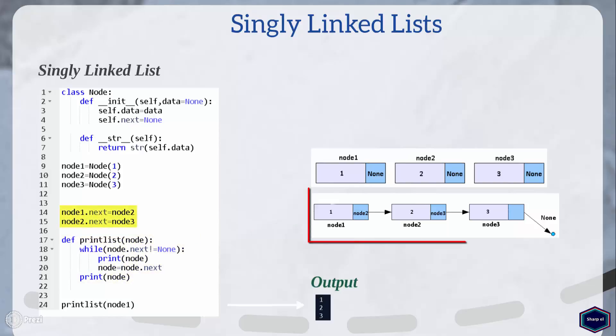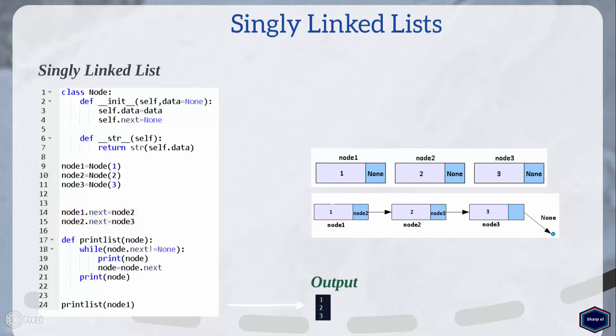I have created a singly linked list, but it is not the right way one should create a singly linked list in any programming language. When creating a linked list it is common to introduce another class, commonly called linked list, that provides everything to create an empty linked list, add and remove nodes into it, traverse the list, and provides other housekeeping functions. This class also holds an object that points to the first element in the list.